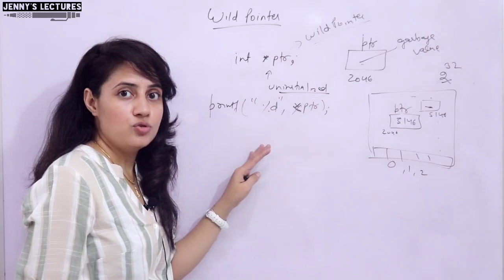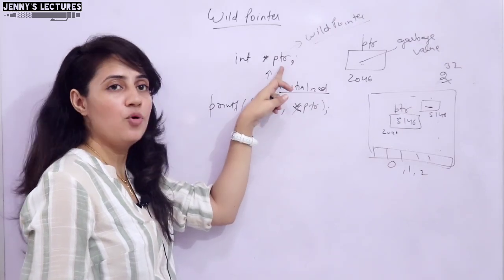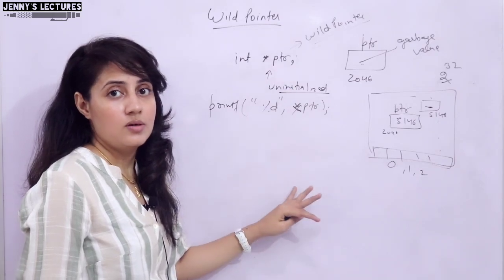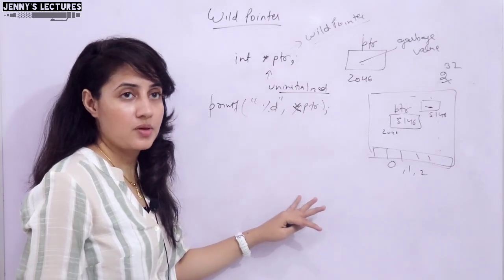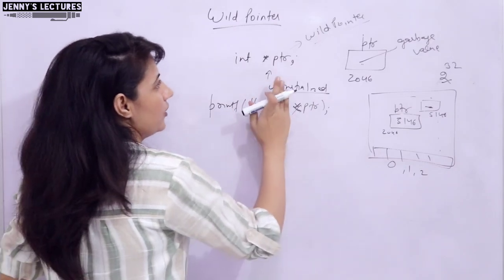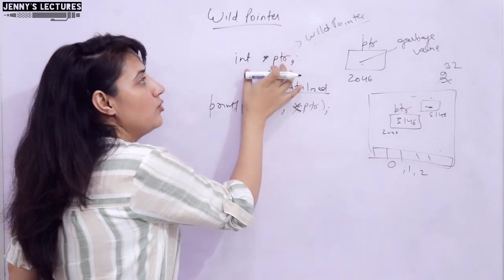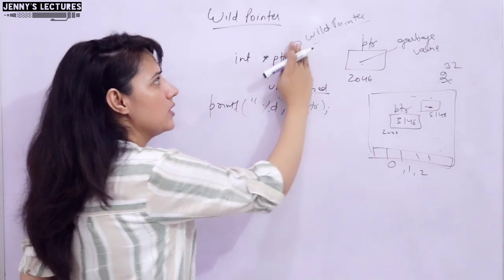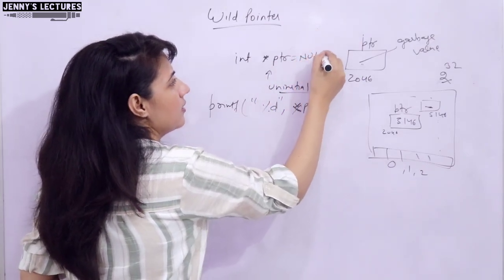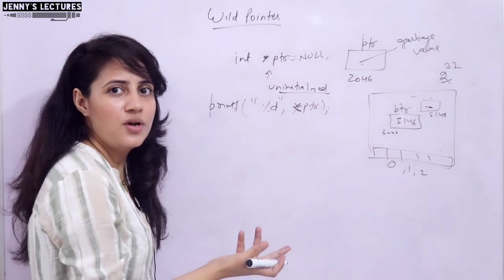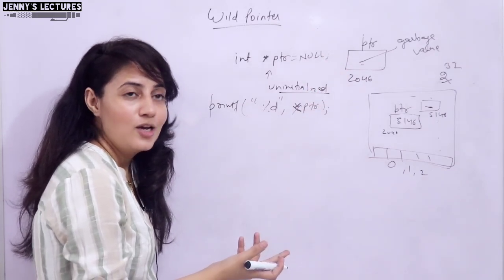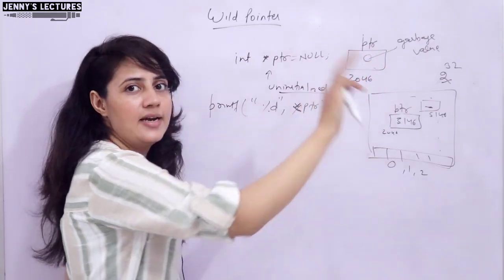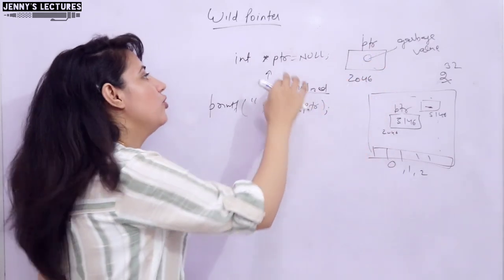So these are risky to use. Please don't leave any pointer uninitialized because it will give some nasty bugs in your system, in your program. So now what is the solution? What you can say? If you don't know what address you want to store in this pointer, then simply you can make it null pointer that we have already discussed. So now in pointer we have 0, null. So it is not pointing to any valid address, and we cannot dereference this pointer.